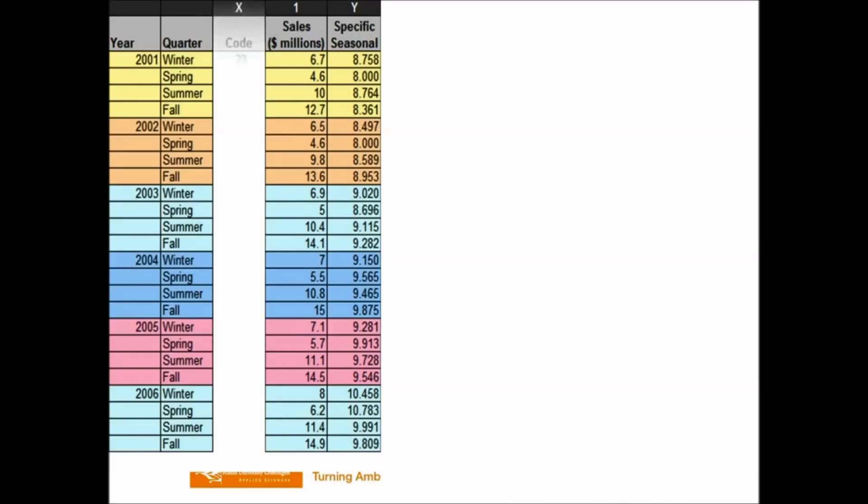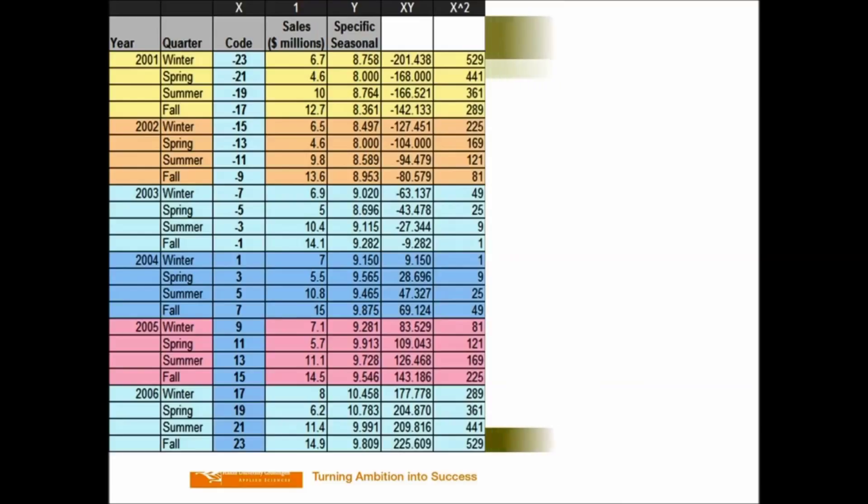We still use the previous example to illustrate that. Now we know that our y variable is the deseasonalized variable, and our x variable is the coding of the time. And then we can have x times y for each cell, each line, one by one. And x squared for each x number, one by one. And for both of them, we sum them up.